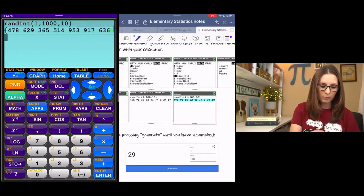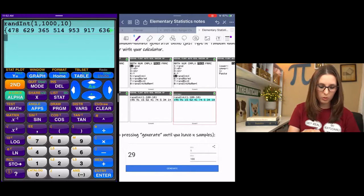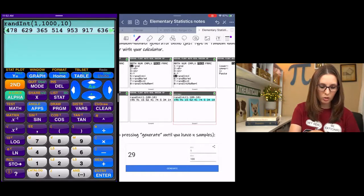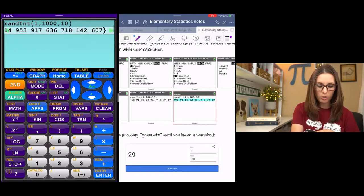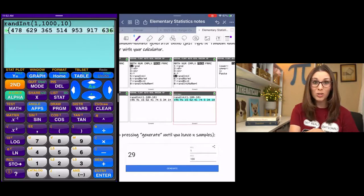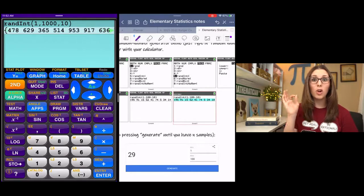And then you should be able to scroll over. It's not letting me, might be one, two, three, four, five, six, seven. Usually you can, there it goes. Scroll over and there's your 10 numbers. So fast, so simple, so modern.